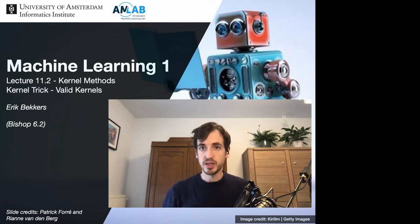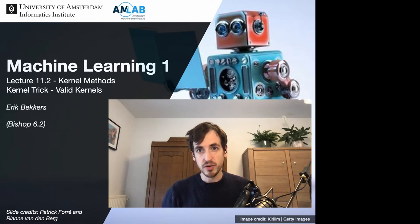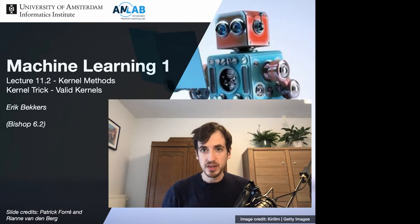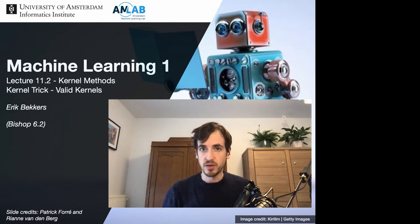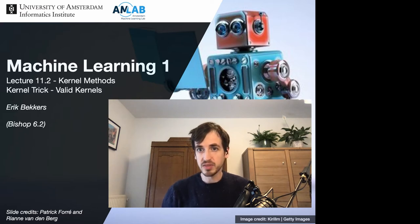We have just introduced the notion of a dual formulation for linear models, which relied on a definition of a kernel function. In this kernel viewpoint we can implicitly work with feature representations which can in principle be infinite dimensional. In this video I'm going to make precise what I mean by this. The main idea is that we will not explicitly define the kernel via the basis functions, but just give a direct definition of this kernel — this is called the kernel trick.